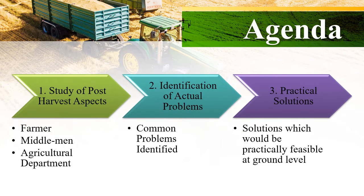The qualitative and quantitative food losses across the supply chain, when measured together, are referred to as post-harvest losses. It usually occurs after the crops are harvested until the time they are consumed. Broadly, three agendas have been discussed in this study: first, various aspects of the supply chain involved in post-harvest; second, identified problems have been suitably presented; and lastly, efforts have been made to provide simple and effective solutions feasible at ground level.